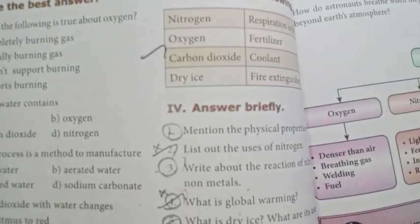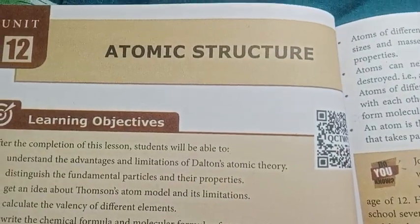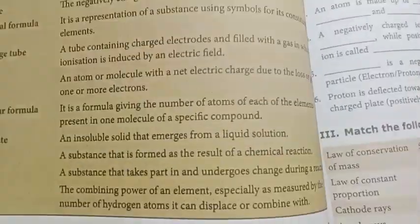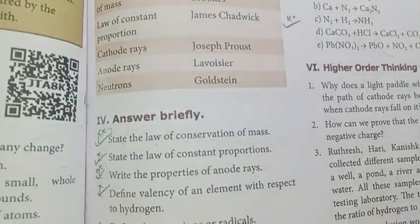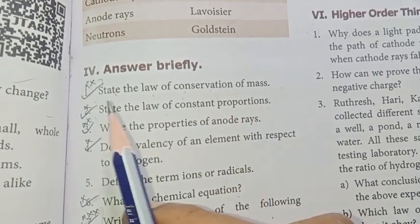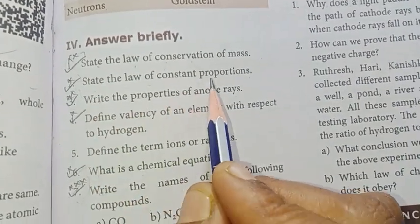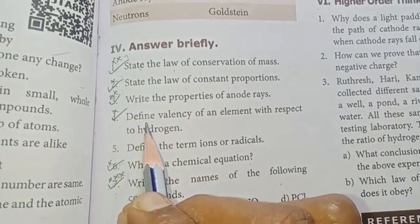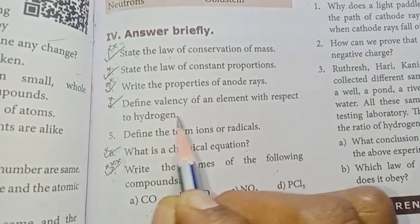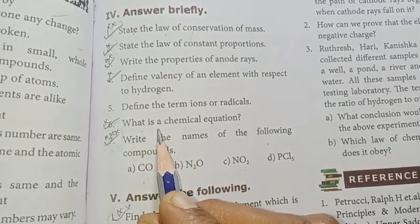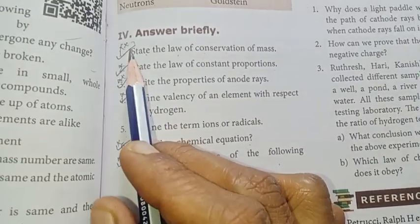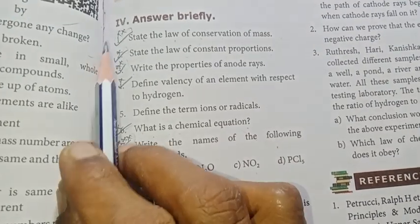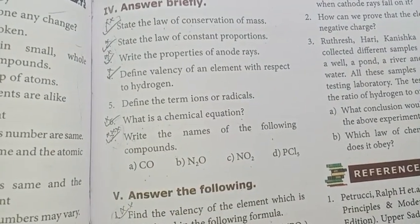Next, page number 124 — Chemistry. Let's take note. Unit 12: Atomic Structure. In this lesson, one marks — all total. Page number 137. First one: State the Law of Conservation of Mass — important. Second: State the Law of Constant Proportions — important. Write the properties of anode rays — repeated in three districts. Define valency of an element with respect to hydrogen — important. What is a chemical equation? Write the names of the following compounds: first, second, third, fourth, sixth, seventh — maximum, all total, important.